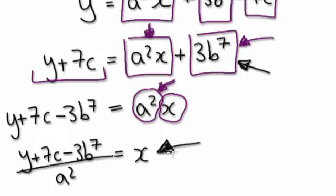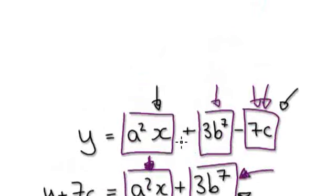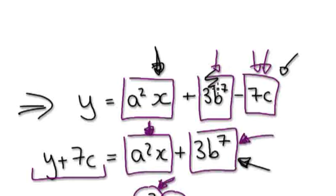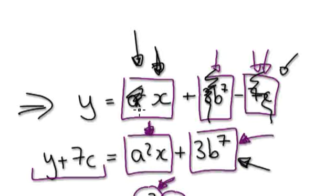You've made x the subject. So when someone gives you something like this and asks you to make x the subject, you would kill off everything around the x — get the bubble on its own, and then kill off the a squared.